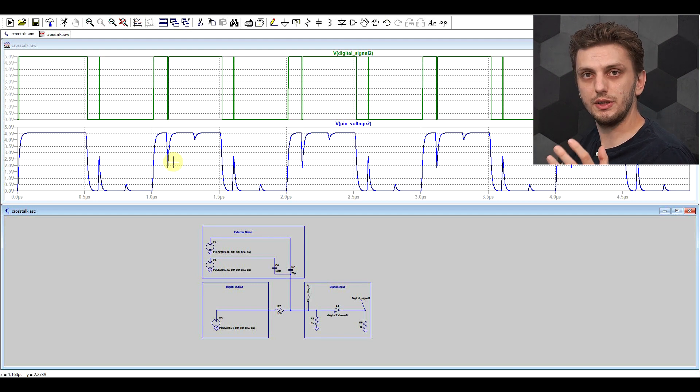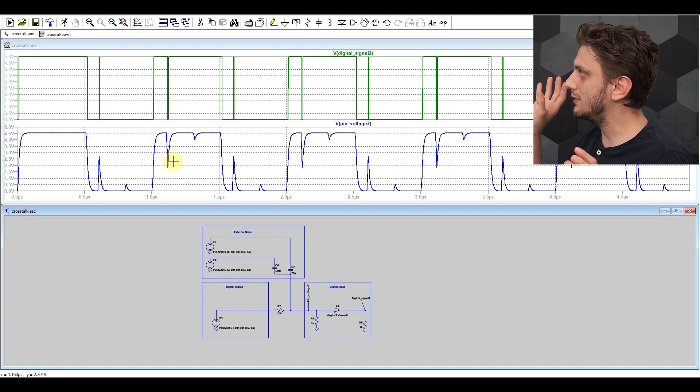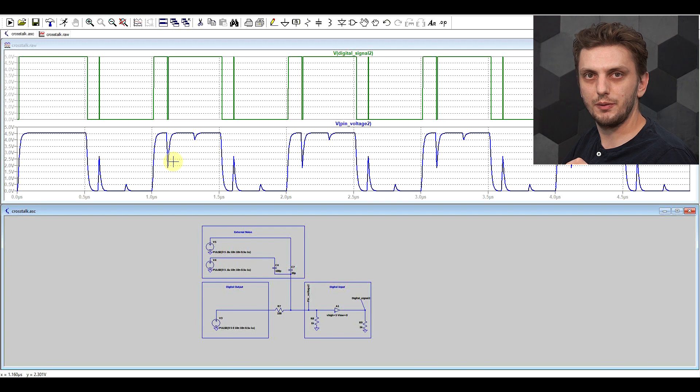So if you have this sort of thing going on in your circuit, you will not be able to communicate between two different ICs. And the worst thing about this phenomenon is that it won't always be as repetitive as it is in the simulation. So you might just have one glitch from time to time, and only under certain circumstances will it actually reach the threshold voltage, so it might not always be this obvious.